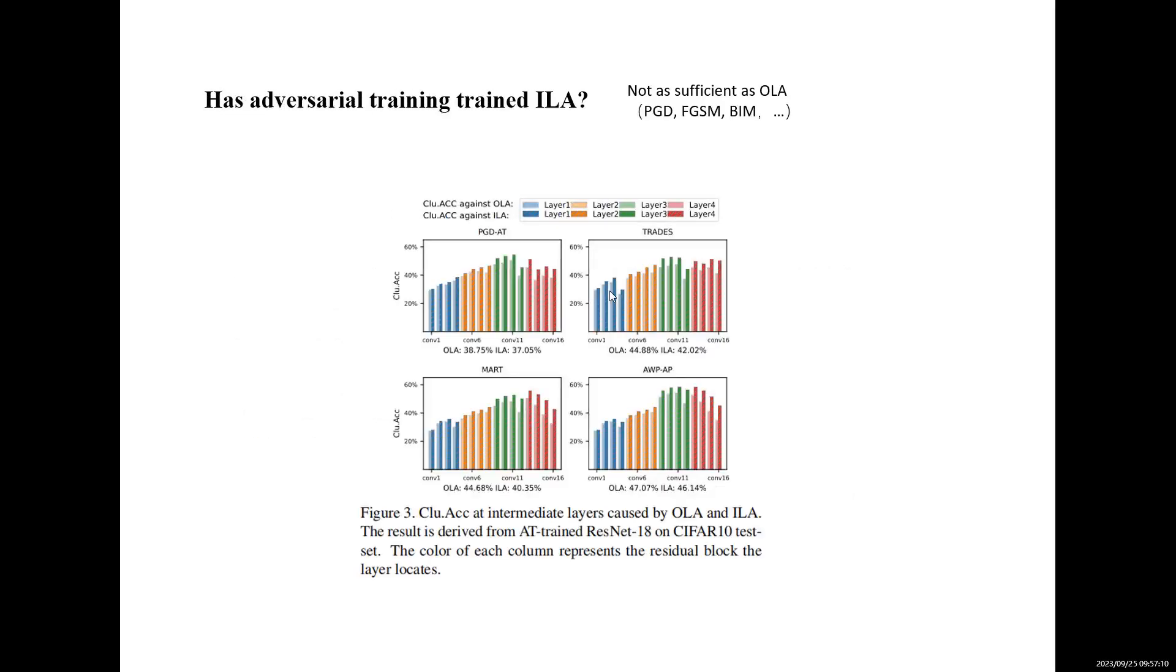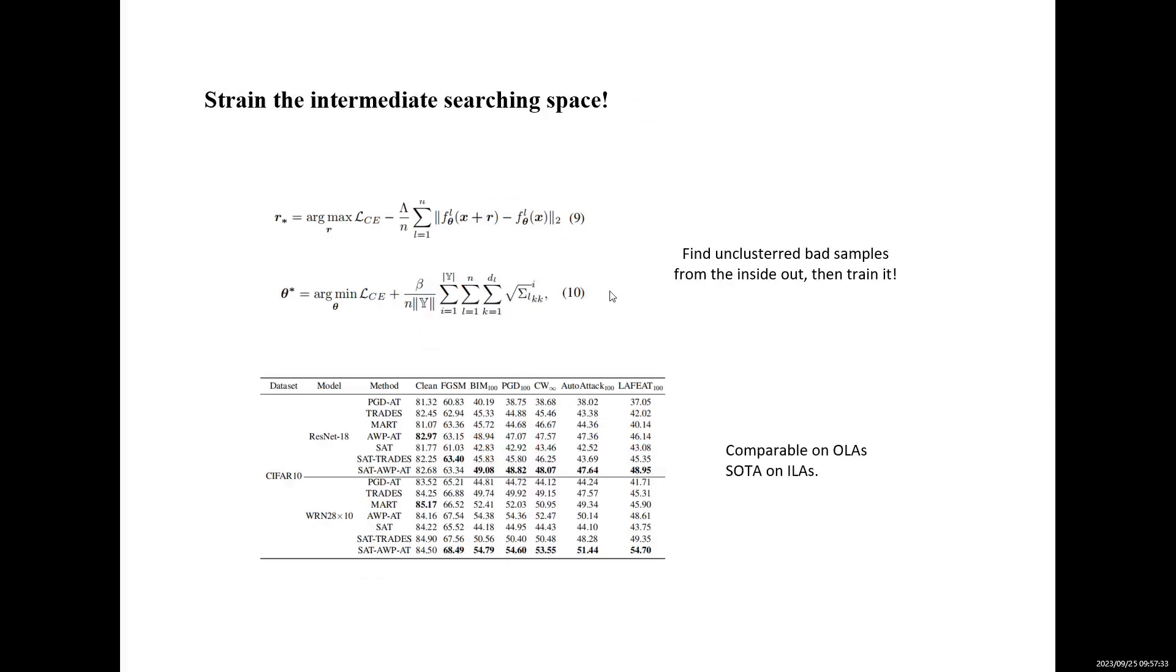By contrasting the clustering accuracy between intermediate-layer attack and output-layer attacks, we find that adversarial training cannot train intermediate-layer attacks as sufficiently as output-layer attacks. Therefore, maximums exploited by intermediate-layer attacks may not be sampled sufficiently by AT.